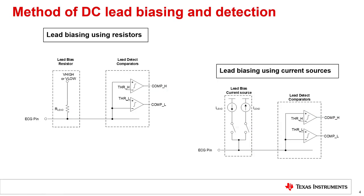Lead detection requires biasing the leads to a potential which could be high or low. Such biasing could be done either using a resistor or a current source. When a resistor is used for biasing, the other end of the resistor can be connected to a high-side potential, V-high, or a low-side potential, V-low. When the lead is open, the pin gets pulled by the resistor to V-high or V-low. When the current source is used for biasing, the polarity of the current source — either source or sink — determines in which direction the pin gets pulled when the lead is open.